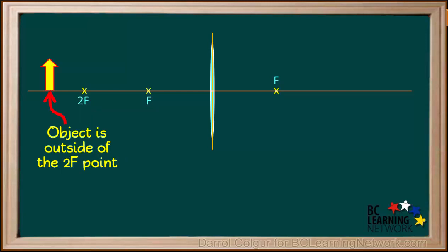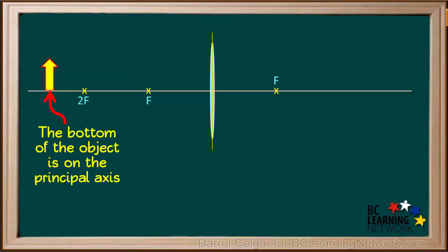The first case we'll look at is where the object is farther away from the lens than the 2F point, or outside the 2F point. We'll use a yellow arrow for the object. Notice the bottom of the object is sitting on the principal axis in our example.